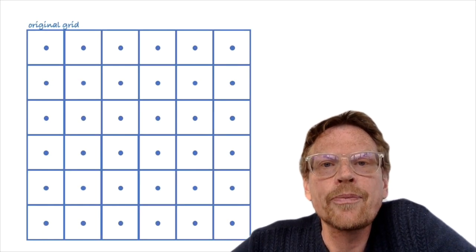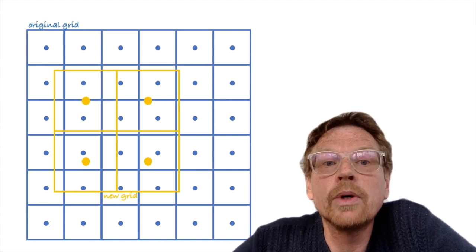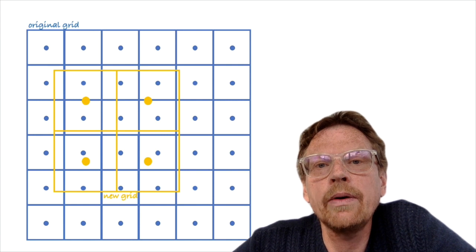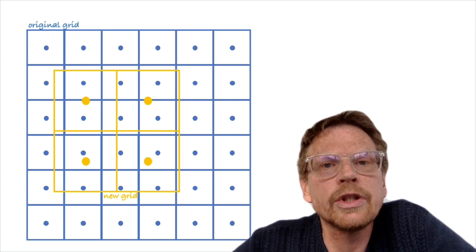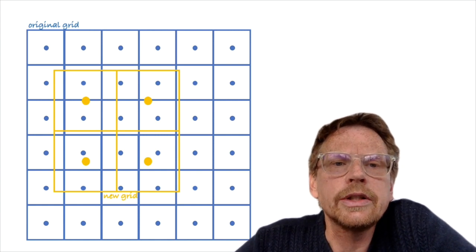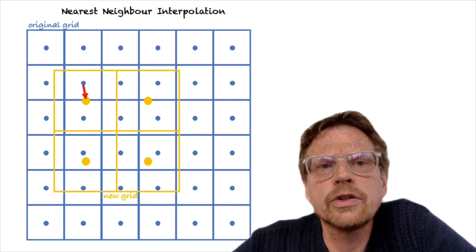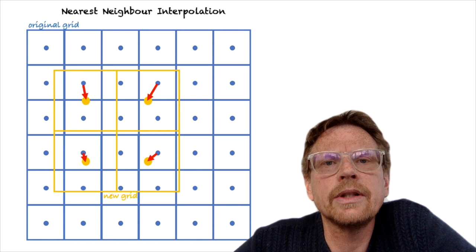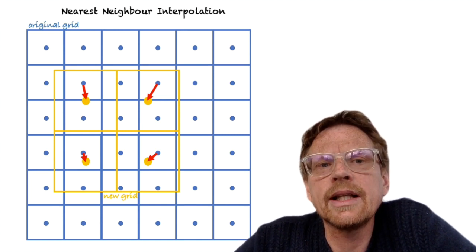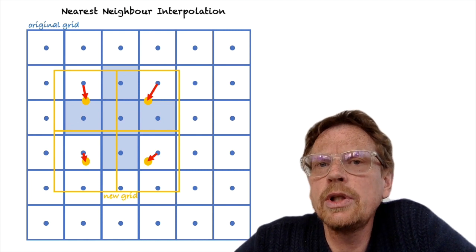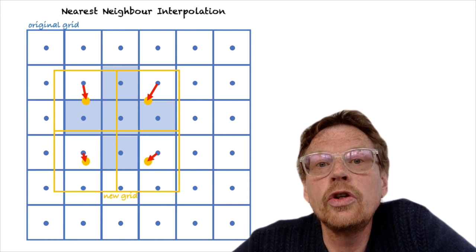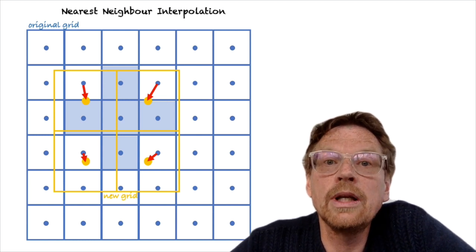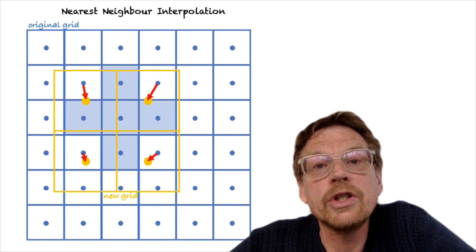Here we have the example again of the original grid in blue boxes, but now we want to actually interpolate this to a coarser resolution grid. This has the advantage that the final datasets that you're comparing will be much smaller in size, but there are problems to look out for. If we use nearest neighbor, each of the points in the new grid takes the value from the nearest point in the original grid. One thing we see immediately is that some boxes — shaded blue here — will not have their values used in the interpolation, so the information in those grid boxes in the original file will be lost. This will be especially a problem if we're interpolating a field which is very heterogeneous.